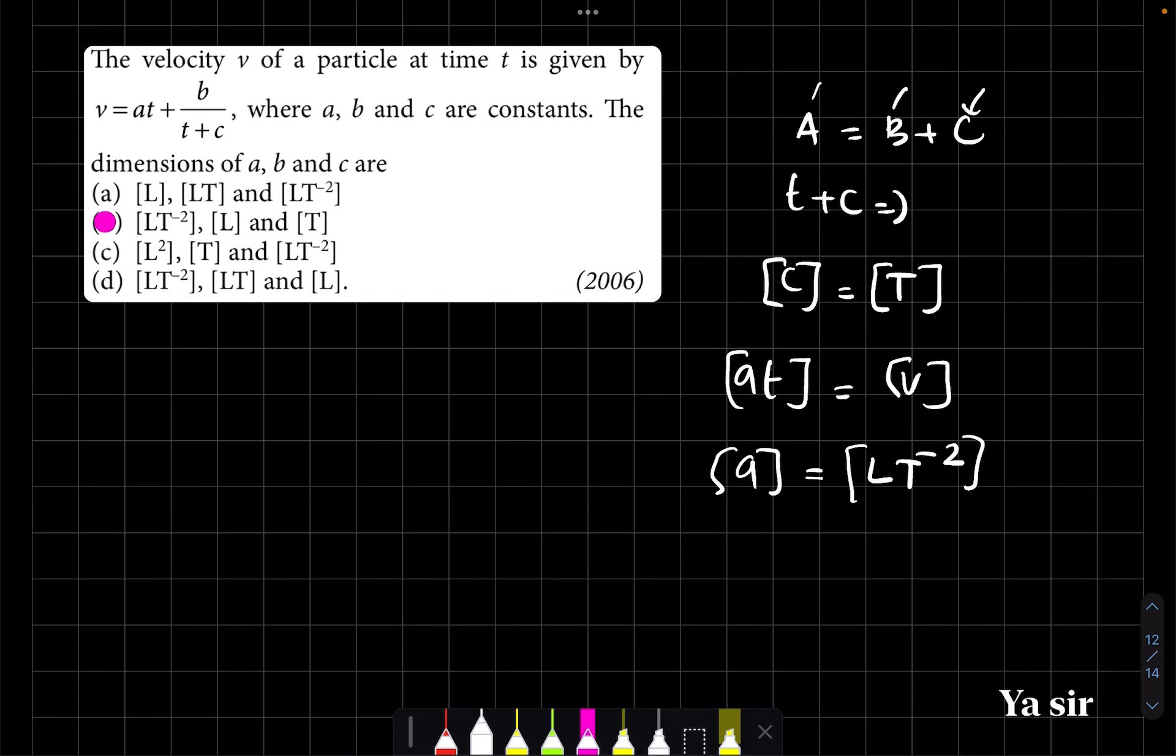What is the dimensional formula of b? How to find out that? So you can see that b divided by... What is the time? t plus c dimension is time, is same as LT to the power minus 1.